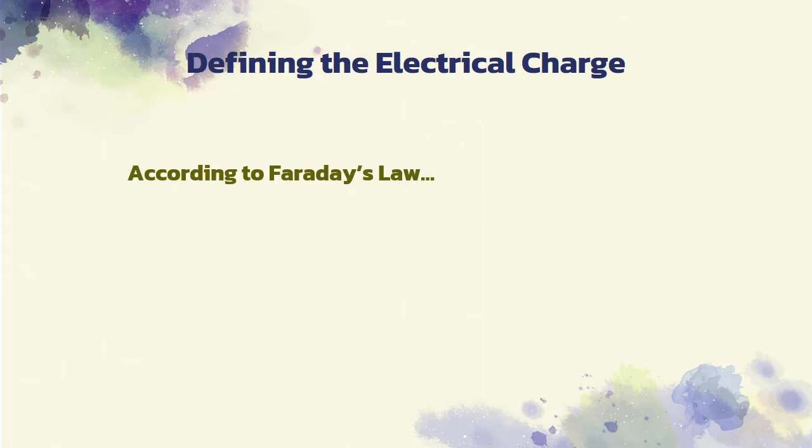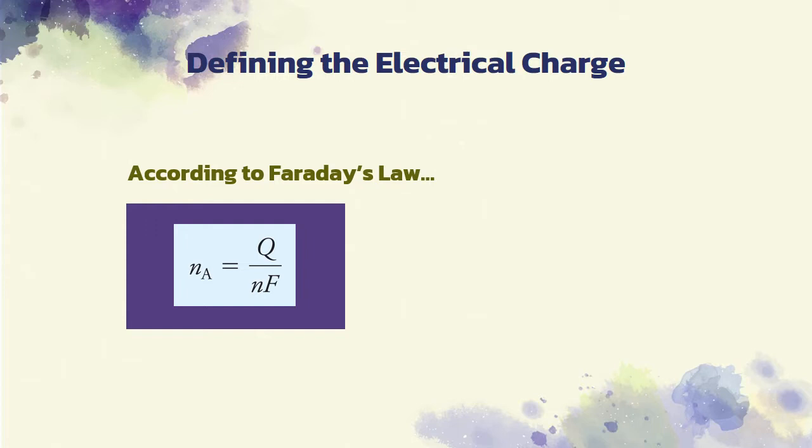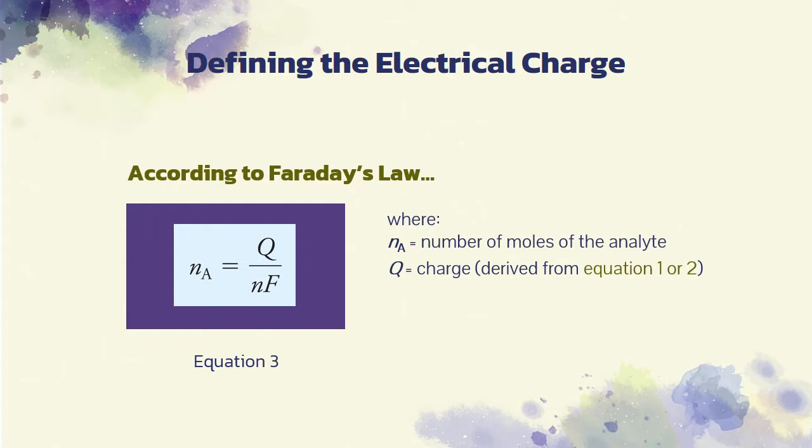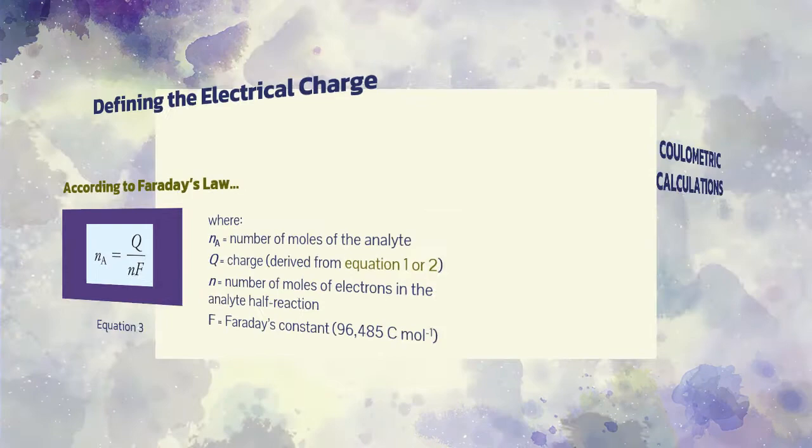Furthermore, Faraday's law relates the number of moles of the analyte a, n sub a, to the charge q. This is given by equation 3, where n sub a is equal to the number of moles of the analyte, q is the charge, which could also be derived using equation 1 or 2. n is the number of moles of electrons in the analyte half reaction, and f is the Faraday's constant.